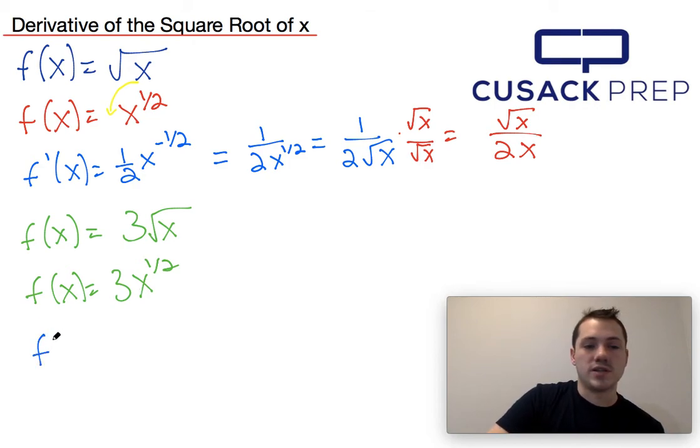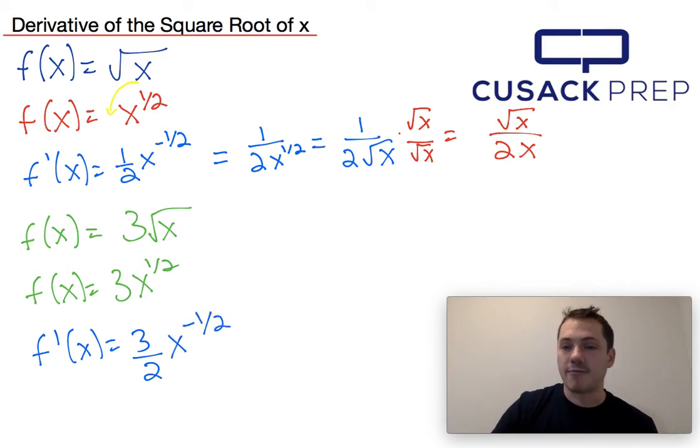So then if we wanted to go ahead and take the derivative, we would do 1 half, bring it to the front, so 3 times 1 half is 3 halves times x raised to the negative 1 half power.